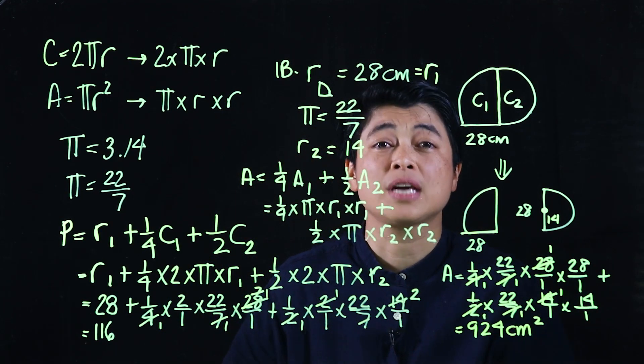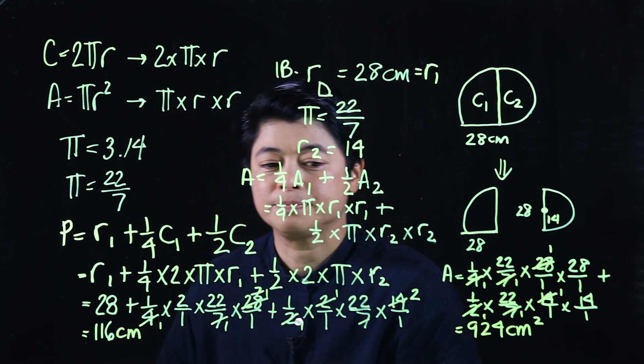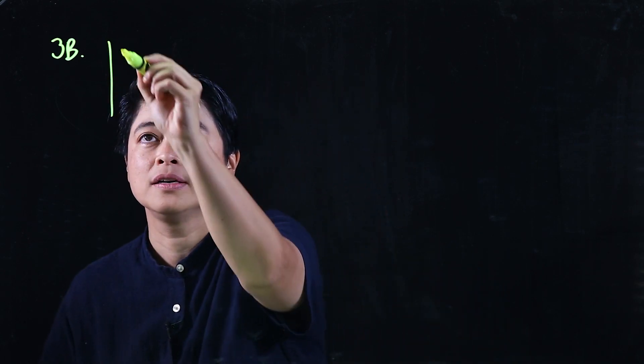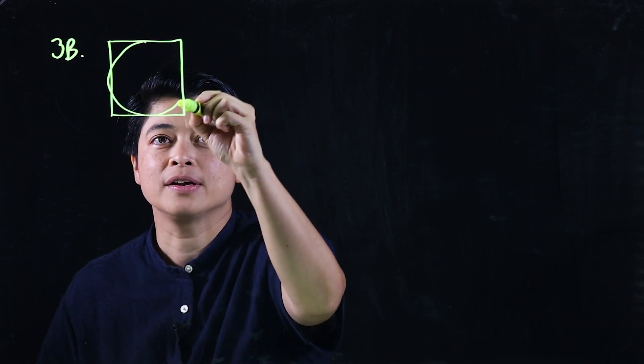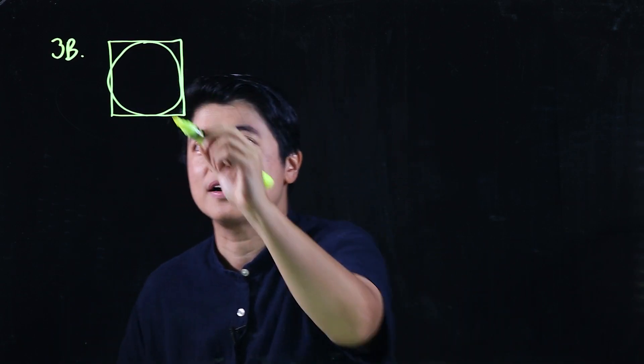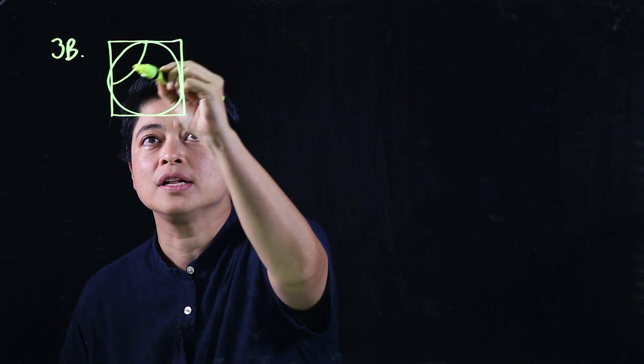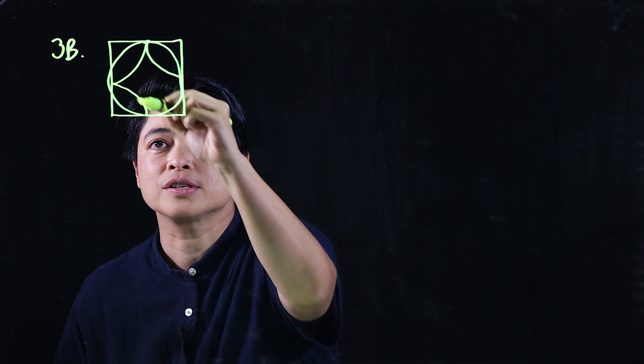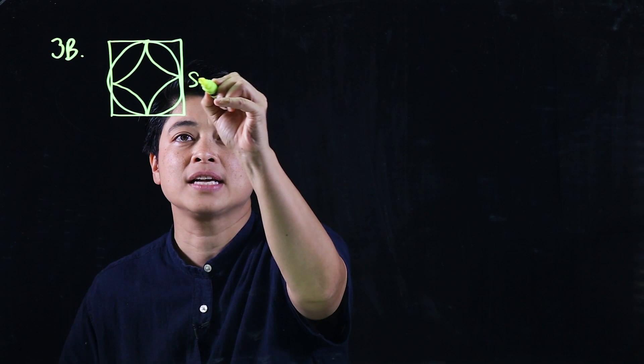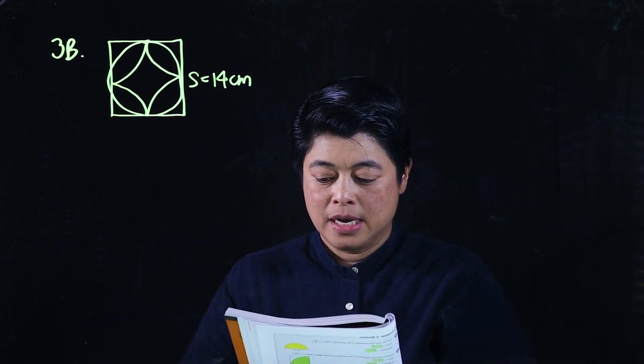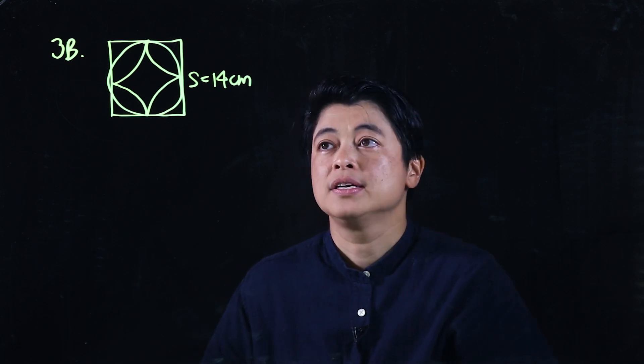The other problem is on page 158, problem 3b. The figure shows a circle and four quarter circles inside a square. The side of the square is 14 centimeters. The problem asks us to find the area of the shaded parts, using pi equal to 22 over 7.